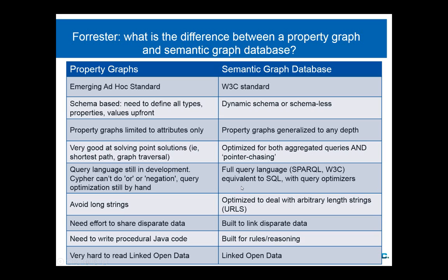For that you need a query language. In property graphs there's Cypher, which lets you specify graph operations, but it's very focused on graph operations and not on aggregated queries. SPARQL is very much like SQL, and every triple store now has a query optimizer to optimize queries. If you want to do aggregated selection in Cypher, you have to do your own query optimization by hand. I have no doubt that will get better in the future, but that's the state of the art right now.